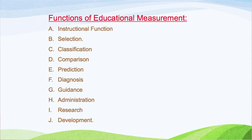Last but not the least is development — developmental function is the last function of educational measurement. On the basis of learning outcomes and results, we can make plans for future development and help students to learn in a better way and to excel in all the activities of their educational function. So these are the functions that educational measurement performs or serves.